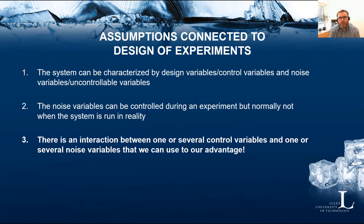Some important assumptions for robust design and their connection to design of experiments: first, the system can be characterized by design variables or control variables, and noise variables or uncontrollable variables. Second, noise variables that cannot be controlled in reality can be controlled for the purpose of an experiment. Importantly, there must be an interaction between one or several control variables and one or several noise variables — if no such interactions exist, we do not have a robust design problem.